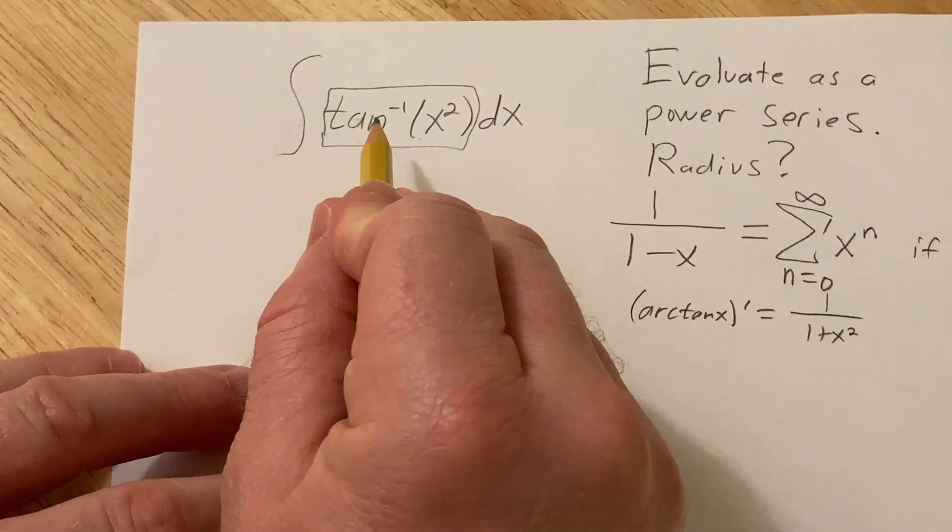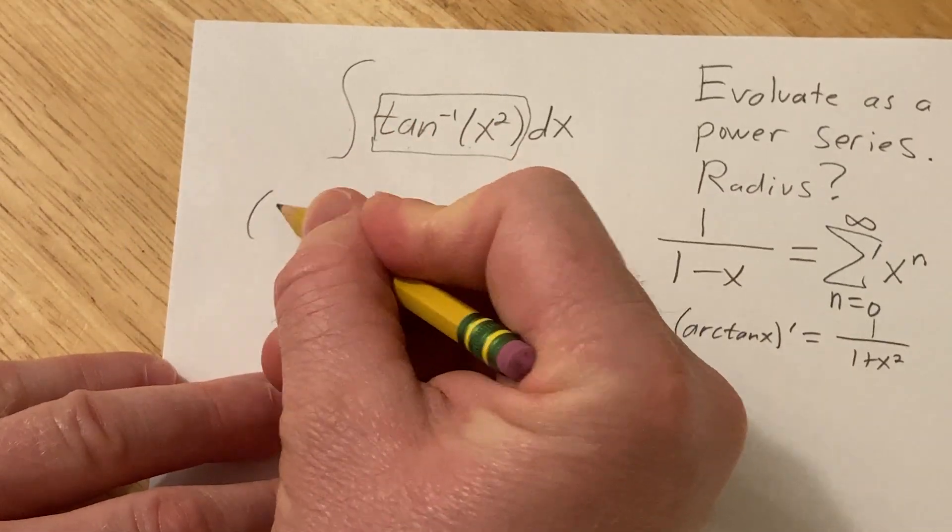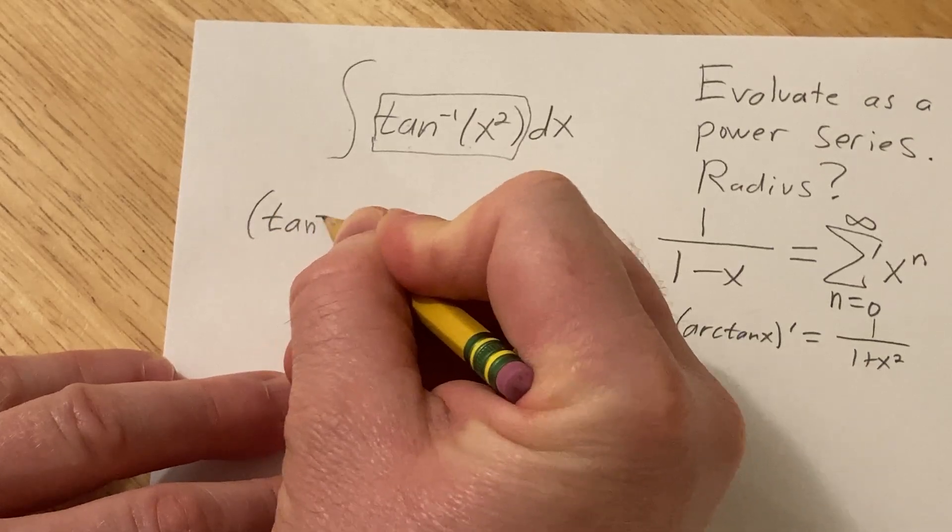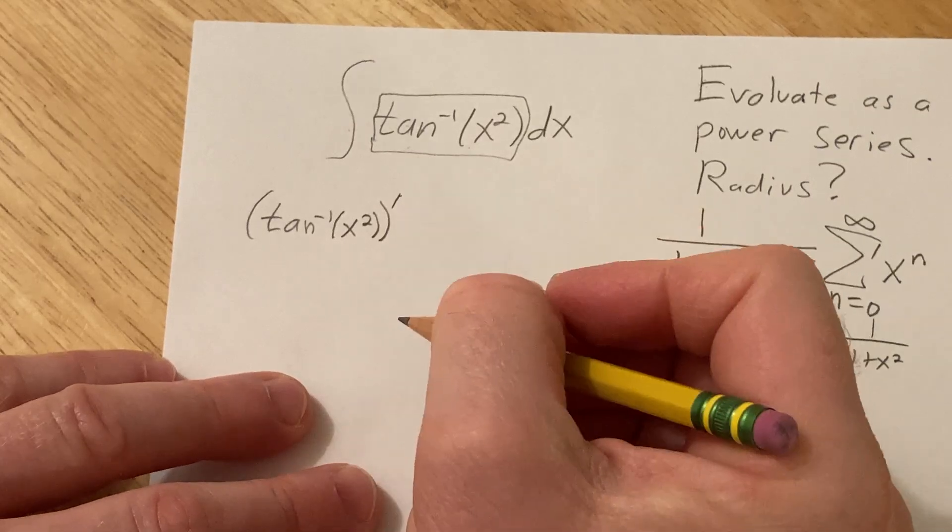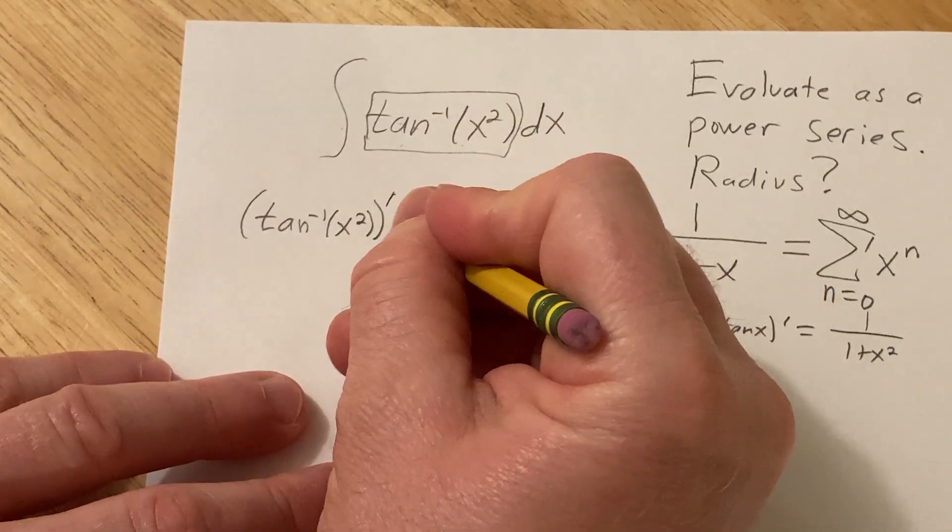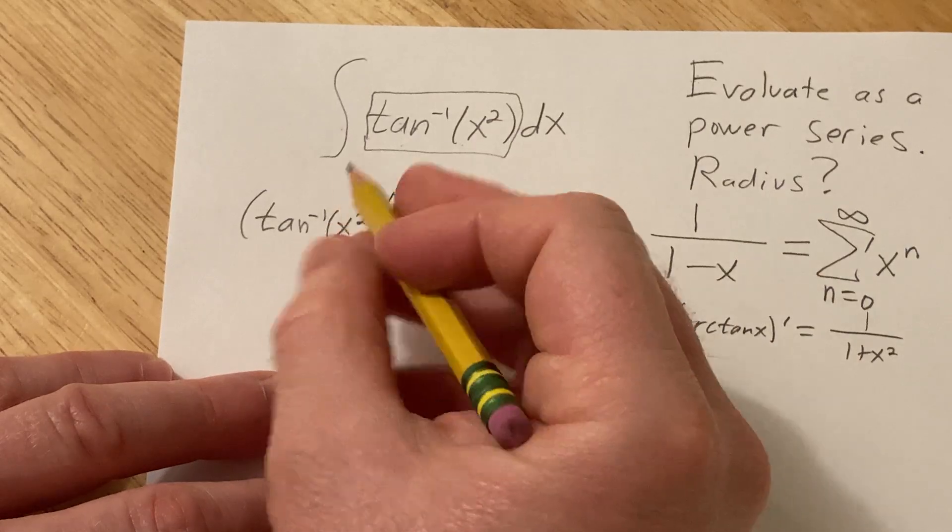So first thing we're going to do is differentiate this. We have tan inverse of x squared and we're taking the derivative. I have not done this problem, I thought it just looked kind of fun so I thought let me just make a video.